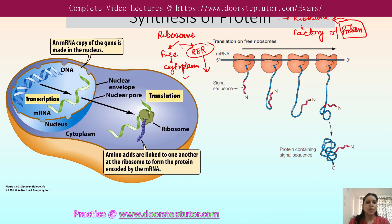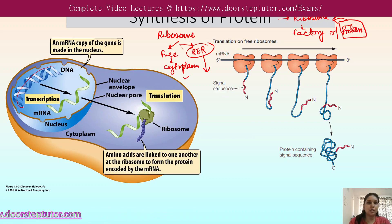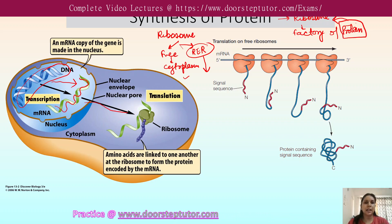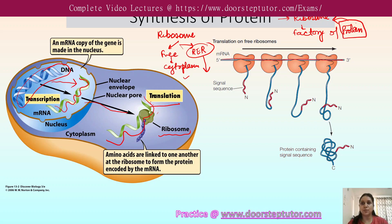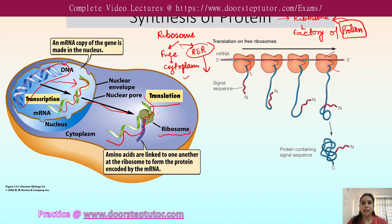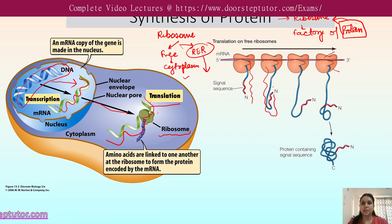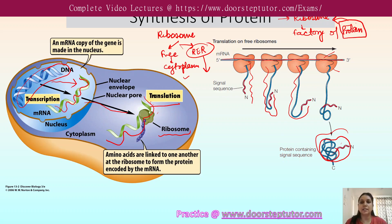Inside the cell, DNA is present in the nucleus. It undergoes transcription, where mRNA of the gene is made in the nucleus and then transported outside the nucleus into the cytosol, where it attaches to the ribosomes and starts the synthesis of the protein — a process known as translation. As we can see in this diagram, the mRNA attaches to the smaller and larger units of the ribosome, the protein grows in size, folds, contains signal sequences, and is then present inside the cytoplasm.